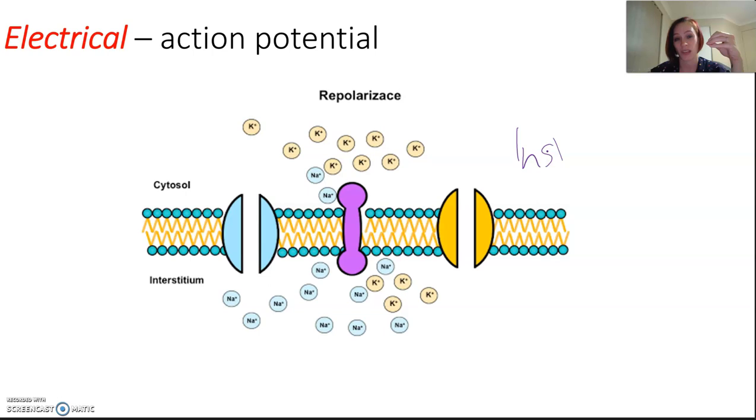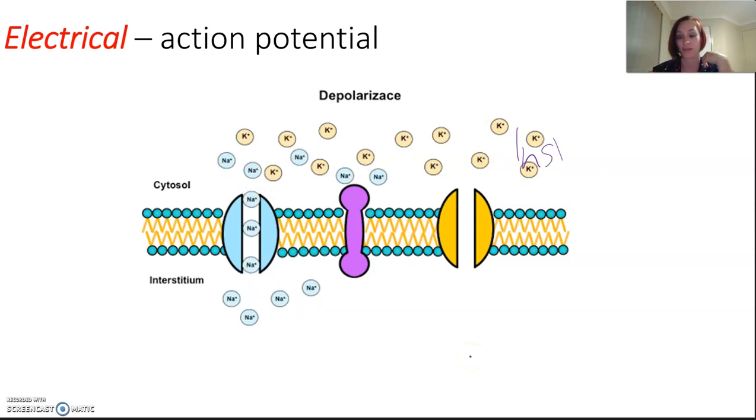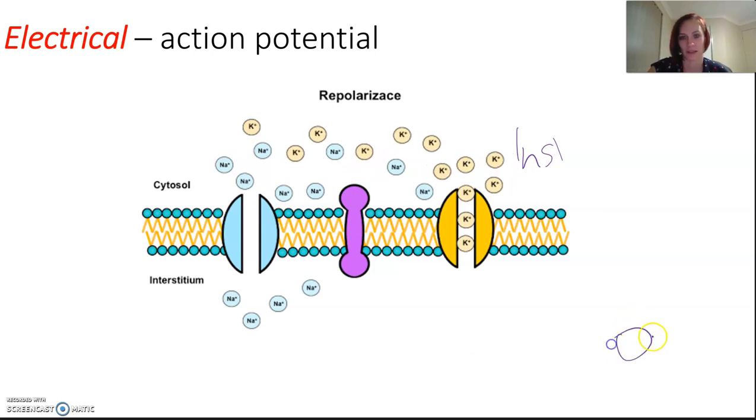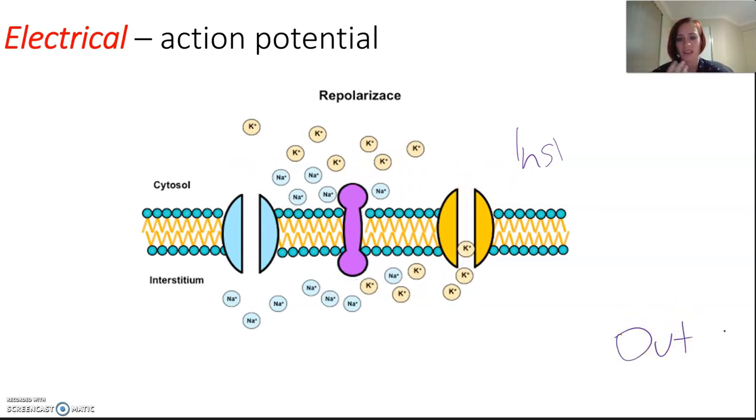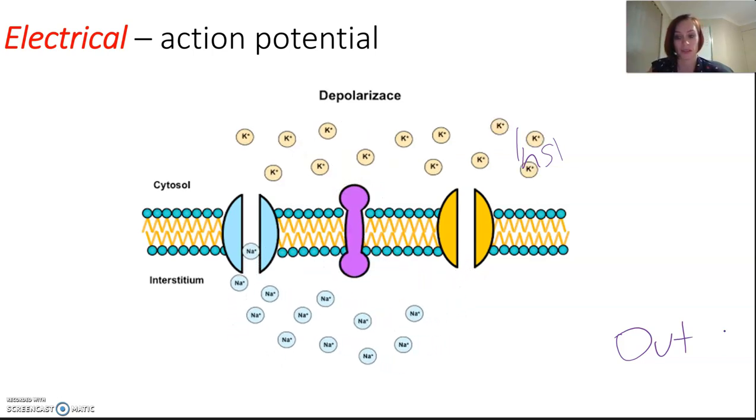Then, in the next phase, repolarization, the voltage gate potassium channels open up and we'll see the potassium flow outside the cell. This is the outside. So, potassium then flows outside. The negative charge inside the cell returns. We've repolarized it and then the gate's shut.